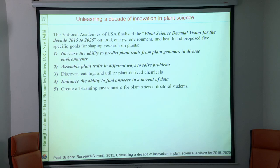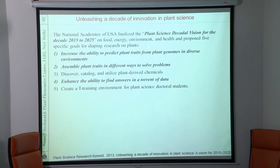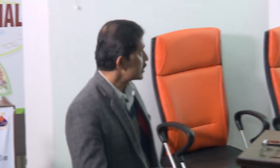In the last two decades, a lot of information has been generated about genomics. Now you can produce a genome sequence at a cheaper cost. So what to do with the genome sequence? In the US, different science academies met in 2013 and thought about what should be the major goal for plant science research. One of the goals is to increase the ability to predict plant traits from plant genome in diverse environments — that is, once you sequence, you know the sequence information, and from that you have to predict the plant trait in different environments. Effort is ongoing to achieve towards this goal.